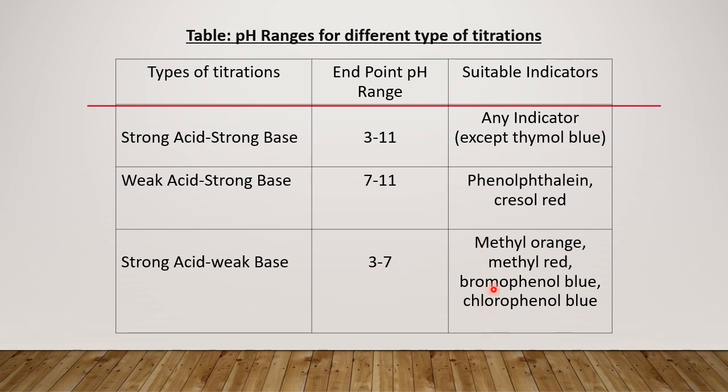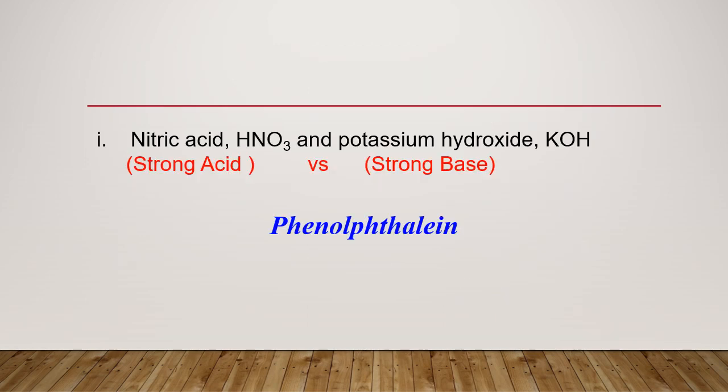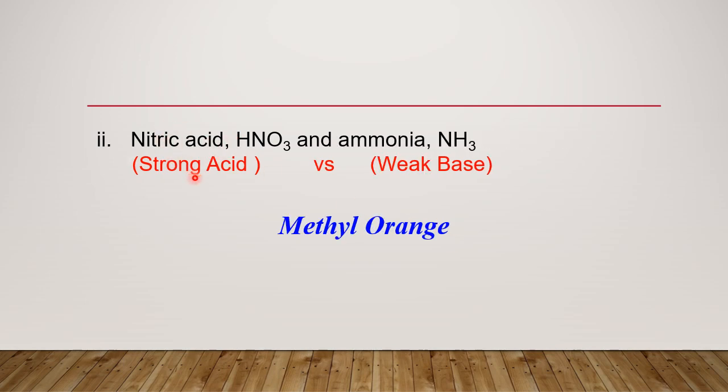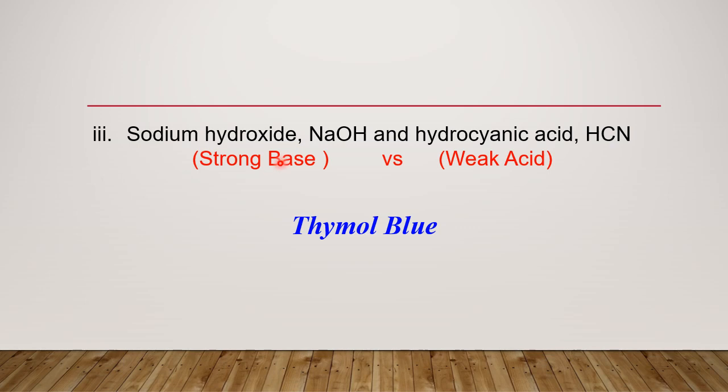So there are a few indicators that we can use. So after you know this pH range, then for the first question: nitric acid is a strong acid, potassium hydroxide is a strong base, so any suitable indicator can be useful. I choose phenolphthalein. Ethanoic acid is a weak acid, ammonia is a weak base, so this combination... ammonia is a weak base, sodium hydroxide is a strong base, so this combination, the suitable indicator that can be used is cresol red or methyl orange.